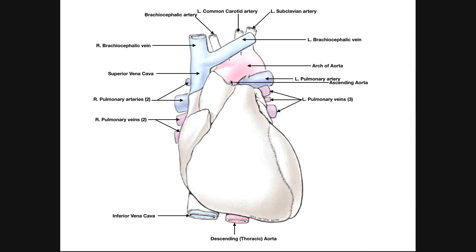The ascending aorta has two small branches — the left and right coronary arteries — which we can't see here but will cover in the next video. The left coronary artery emerges roughly here, and the right one on this side. The two coronary arteries give off branches that supply the heart muscle itself, the myocardium, which requires a lot of blood, oxygen, and nutrients in order to keep pumping your entire life.